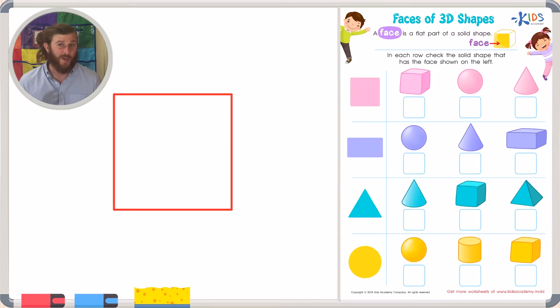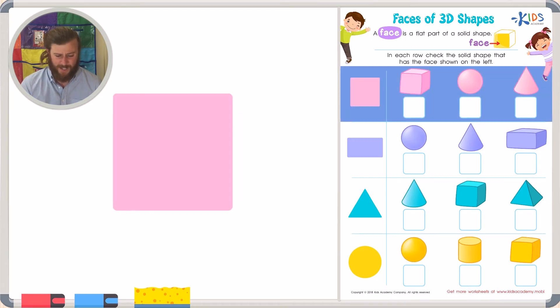Faces of 3D Shapes: In each row, check the solid shape that has the face shown on the left. We're going to be looking at some faces and trying to find out which shapes they belong to. Let's take a look at our first face - we have a square face.